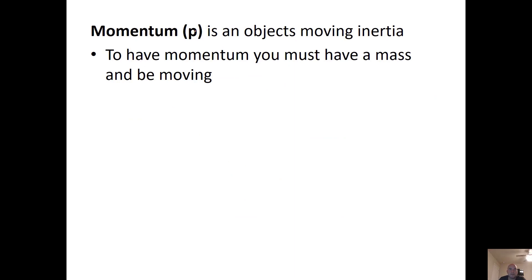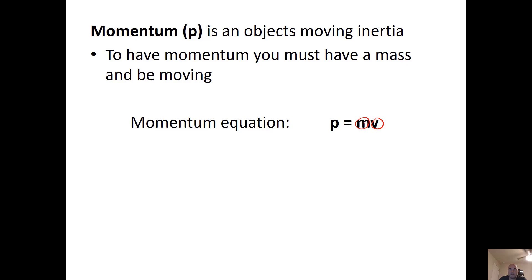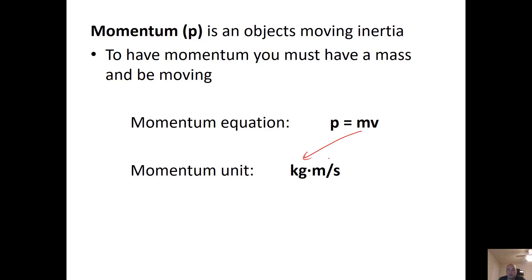Momentum — the symbol is P, the variable you'll see in equations. An object's moving inertia. The equation is mass times velocity equals momentum. To have momentum, you must have mass and a velocity of some sort. The unit comes from mass (kilograms) and velocity (meters per second), so momentum's unit is kilograms times meters per second.